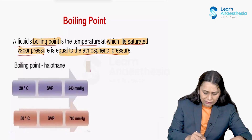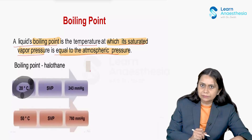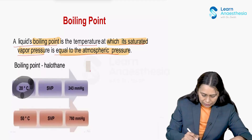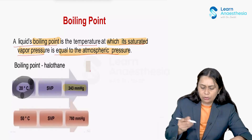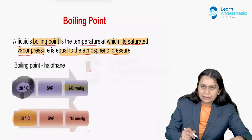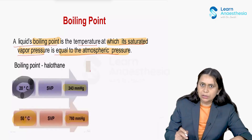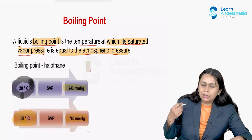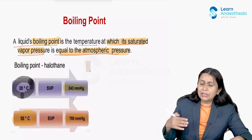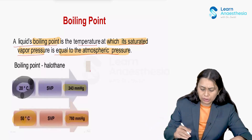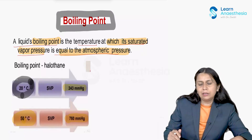For example, if at 20 degrees Celsius the saturated vapor pressure of halothane is 243 mmHg, if we increase its temperature to 50 degrees Celsius, the saturated vapor pressure equals atmospheric pressure — that is the boiling point of halothane. The temperature at which the saturated vapor pressure equals atmospheric pressure is what is called the boiling point of the liquid.